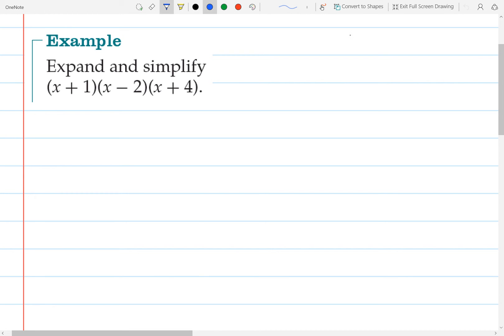Our first step is just going to be to write the first bracket out exactly the same. And then we're going to expand the second two brackets, so those brackets there. That would give us x squared plus 2x minus 8.